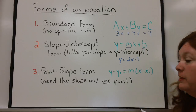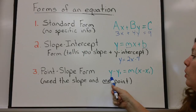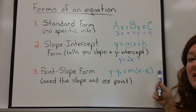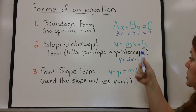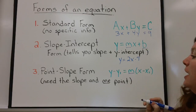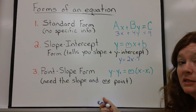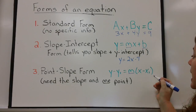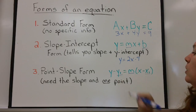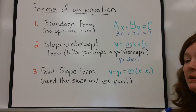The third form of an equation is called point-slope form. It looks like this: y minus y-sub-1 equals m times x minus x-sub-1. Now m is still slope, just like in slope-intercept form. The other information in point-slope form is a point — you can look at this form and identify a particular point on that line, which is x-sub-1 comma y-sub-1. You need the slope and one point to use this format.